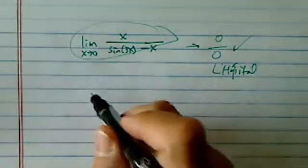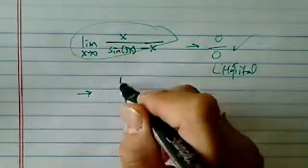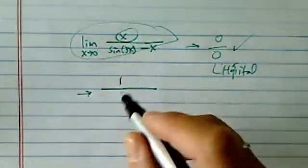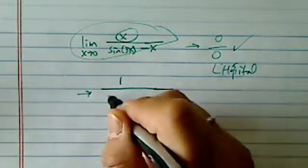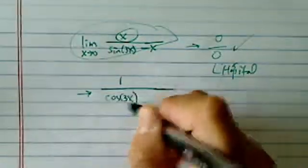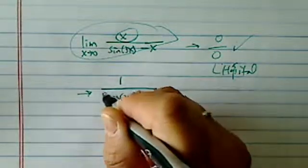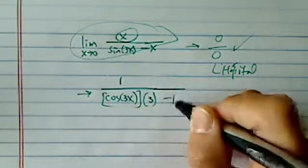This one does check out. So what we're going to do is check out the derivative for the first term on top, which is 1. Derivative on top, you do have to use chain rule, in that it's cosine of 3x times 3, minus 1.